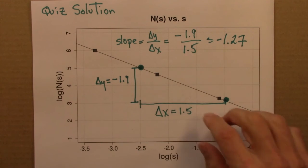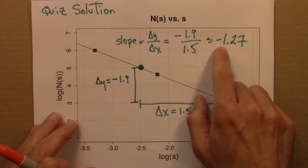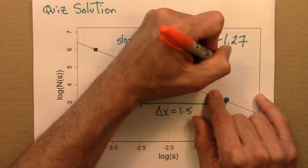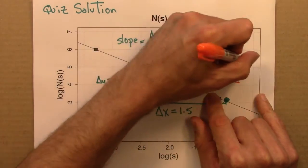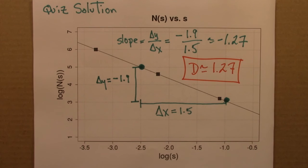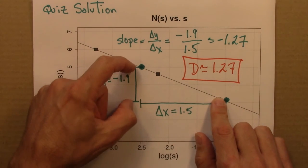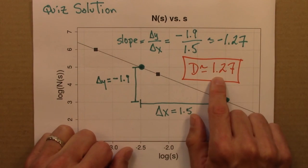And the dimension, the box counting dimension of this shape, whatever it is, is equal to minus the slope. So the dimension is approximately 1.27. You'll likely get different answers slightly depending on which two points you choose on the line and how you approximate those distances. But you should get something around 1.25.